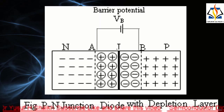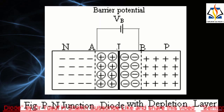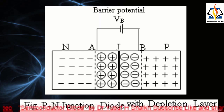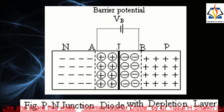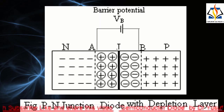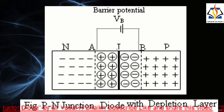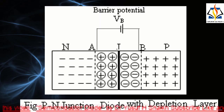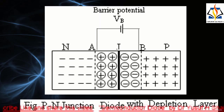This recombination produces a narrow region at the junction called the depletion layer, or the space charge region, or the transition region. It is so named because this layer has no free holes or free electrons — it contains only positive and negative ions which are not free to move. As the depletion layer builds up, a difference of potential appears across the junction.